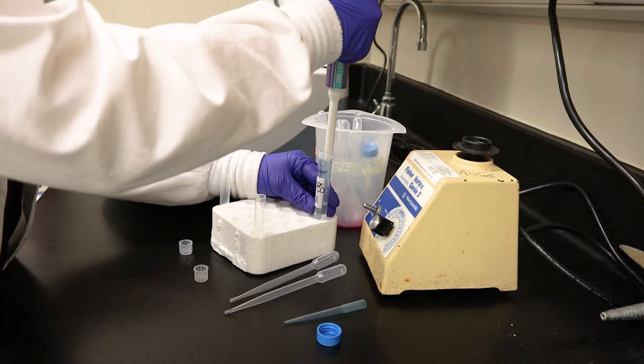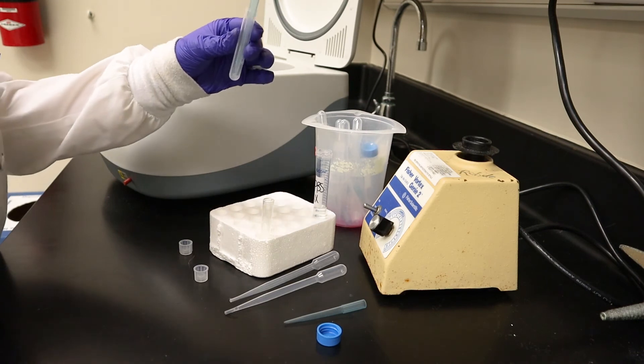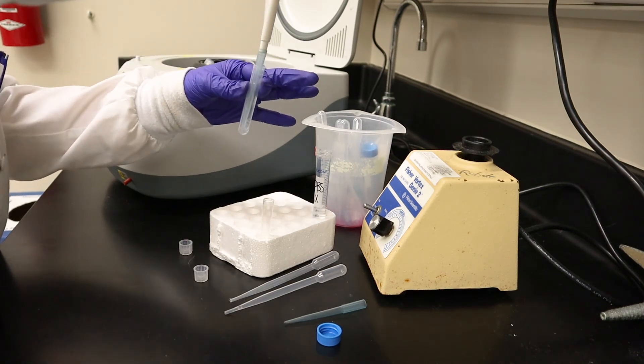Once the tube was empty with only the pellet present, I added half a milliliter of PBS. I triturated my cells within the PBS to resuspend them and spun them down for 5 minutes into a pellet.